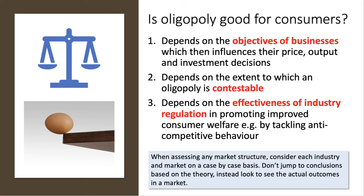The third point is that most oligopolies are in some shape or form regulated by an industry adjudicator, regulator, or statutory body. So the outcome depends on the effectiveness of industry regulation — for example, in preventing and tackling instances and allegations of anti-competitive behaviour. On a micro market structure question, it's important to consider each industry or market on a case-by-case basis. Don't automatically jump to conclusions based on textbook theory — consider the evidence to judge actual outcomes in a market.